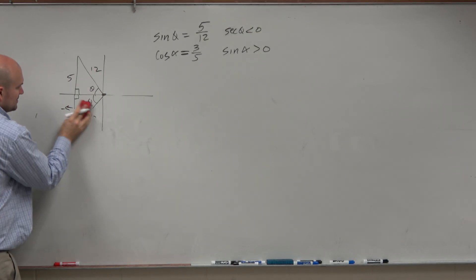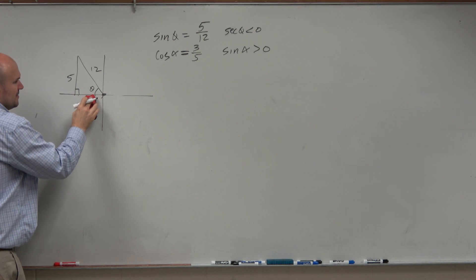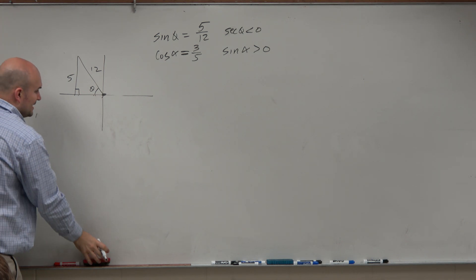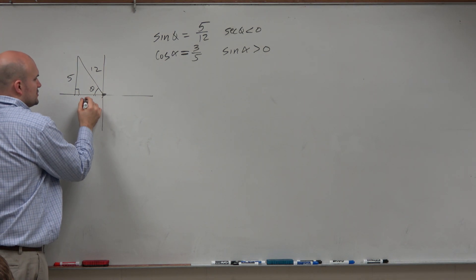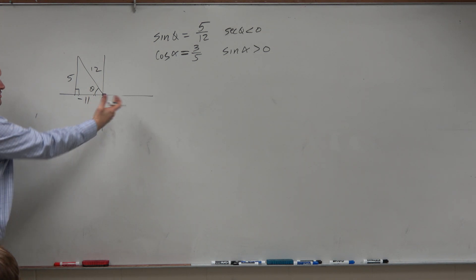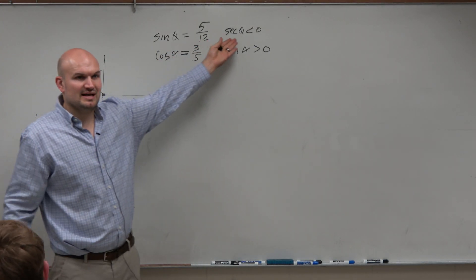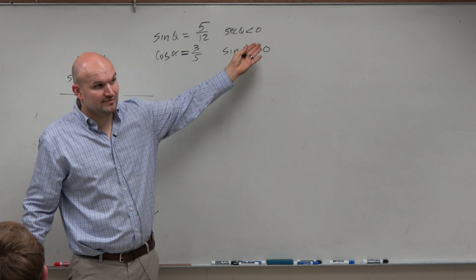Now when I taught this chapter, and we took a quiz and test, the biggest common mistake that students made is they figured out this answer was 11, but they forgot to make it a negative. Because you're in the second quadrant, guys. If secant is negative, that means cosine is also negative, right?